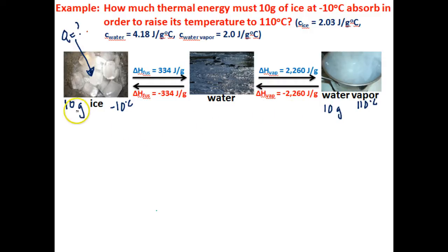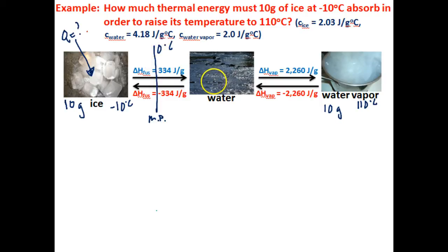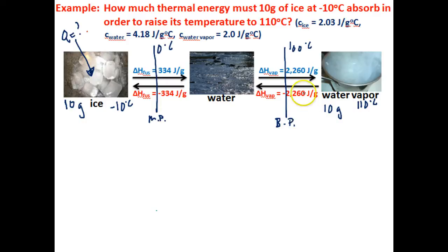Let's think about this. If you've got 10 grams of ice at negative 10 degrees Celsius and it absorbs thermal energy from its surroundings, then its temperature over time is going to increase — it's gonna begin to get warmer. And at zero degrees Celsius, this ice is gonna melt. The melting point or freezing point of water is zero degrees Celsius. So now we're gonna have liquid water, and this water is gonna continue to heat up, so its temperature is gonna increase over time until it reaches 100 degrees Celsius, at which point this water is gonna begin to boil or evaporate and turn into water vapor. This water vapor is now gonna continue to absorb thermal energy, so its temperature is going to increase from 100 to 110 degrees Celsius.